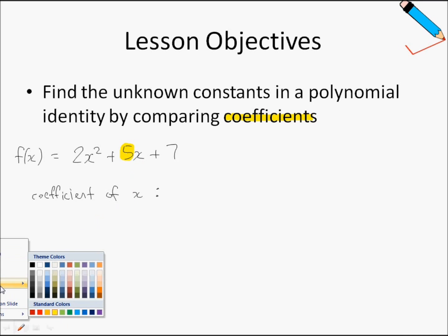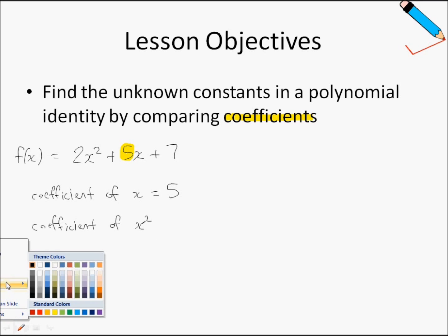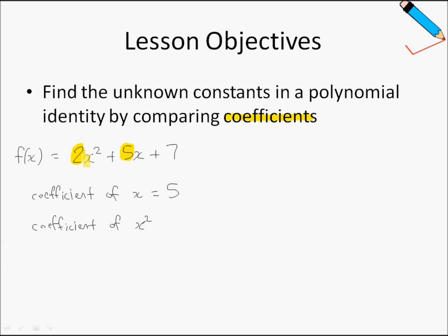Therefore, the coefficient of x is 5. How about the coefficient of x²? The coefficient of x² will be the number in front of x², which happens to be 2 in this case. Therefore, the coefficient of x² is 2.